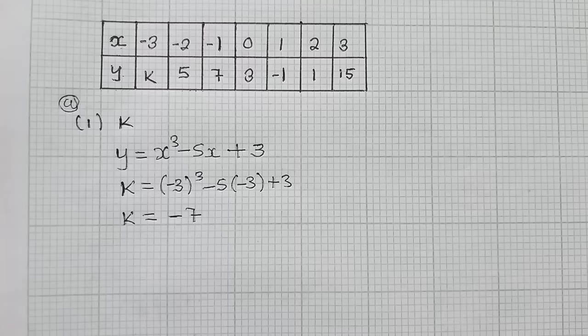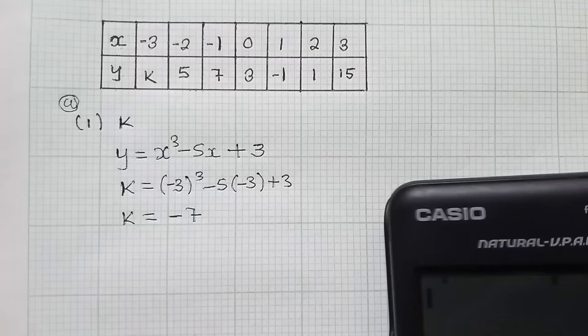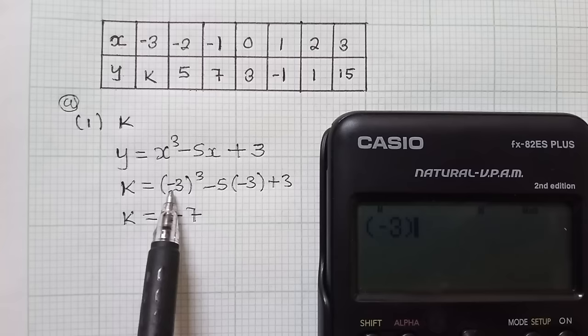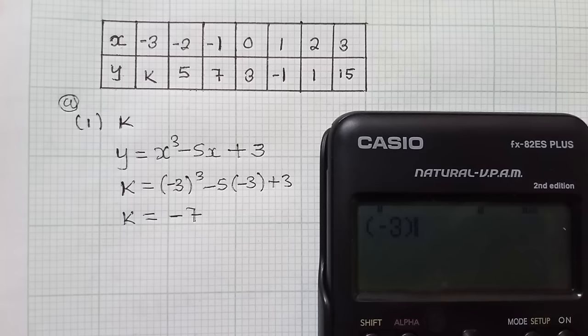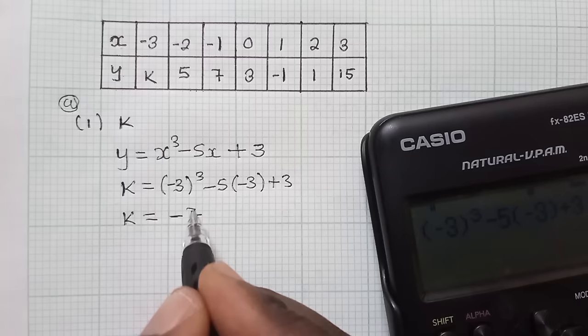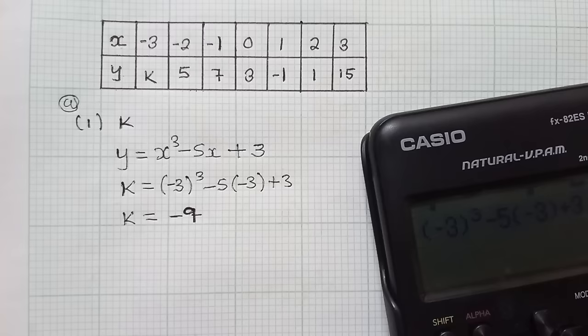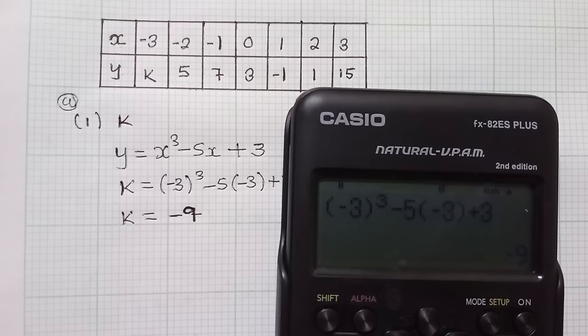So let me try to confirm if what I'm getting is correct. So we have negative 3 — remember, because of this negative, remember to put it inside the brackets. And then I've got power 3 minus 5 there. We have negative 3 plus 3. It's giving us negative 9, not negative 7. So that's why it's very important to confirm your work. Whenever you're doing your work, try by all means to confirm if what you're doing is right. I've punched on my calculator — it has given me negative 9.